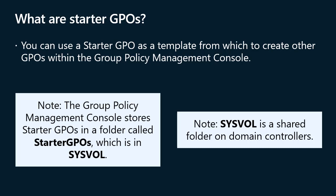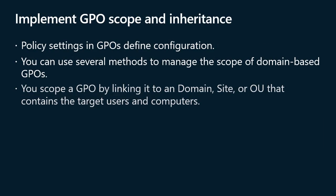SysVol is a shared folder on domain controllers. ADDS includes pre-configured Starter GPOs for Windows client operating systems. These Starter GPOs have administrative template settings that reflect best practices Microsoft recommends for the configuration of the client environment. Policy settings in GPOs define configuration; however, you must specify the computers or users to which the GPO applies before the configuration changes affect computers or users in your organization. This is called scoping a GPO. The scope of a GPO is the collection of users and computers that will apply the settings in the GPO. You can use several methods to manage the scope of domain-based GPOs.